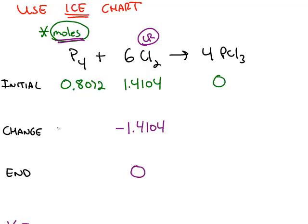The change for the phosphorus will also be a negative number, because the phosphorus is reacting with the chlorine. But the change for phosphorus trichloride will have to be a positive number, because as this reaction uses up phosphorus and uses up chlorine, it's making more and more of the product.